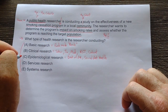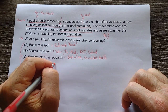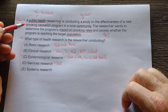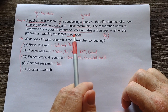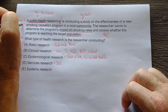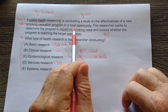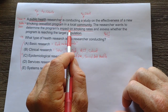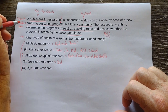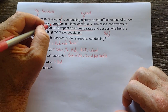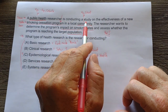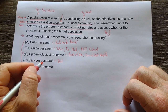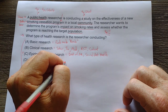So far this one's looking pretty good to me for epidemiologic. Services research looks at the delivery of health care. Maybe this is looking at the delivery of the smoking cessation program to a target population — how could we better deliver this program to improve the impact? But that's not what this question is saying. It's actually studying the effectiveness of the smoking cessation program on impact. So it's not services research, because it's not looking at the organization or delivery of the program.